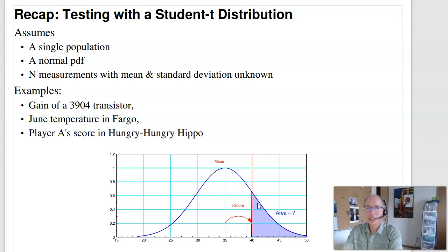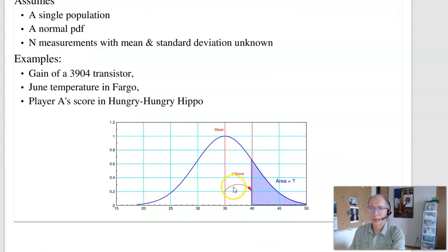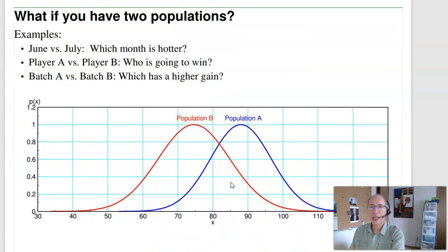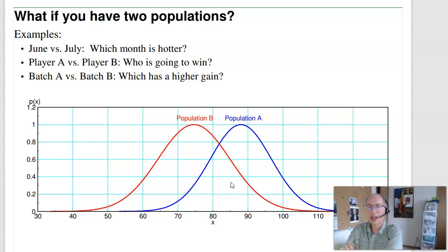With a single t-test, I can do things like find the probability that the gain of a 3904 transistor is bigger than 300, find the 90% confidence intervals, or figure out what player A's score is going to be in a game of Hungry Hungry Hippo. But what happens if you have two populations? For example, I might want to know: is July warmer than August, or vice versa?